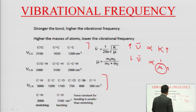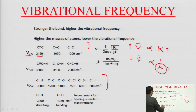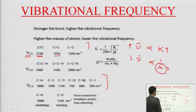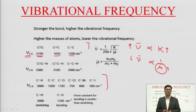Looking at carbon-carbon bond examples: the triple bond absorbs at 2150 cm⁻¹, the double bond at 1650 cm⁻¹, and the single bond at 1200 cm⁻¹. As the force constant decreases from triple to single bond, the vibrational frequency also decreases.